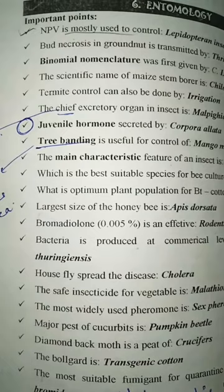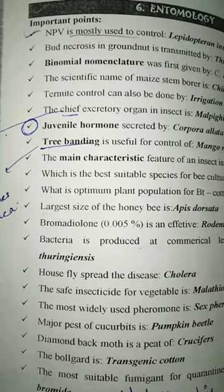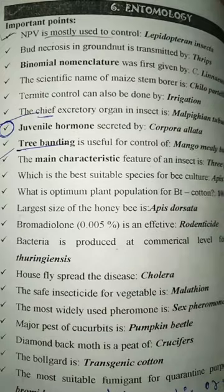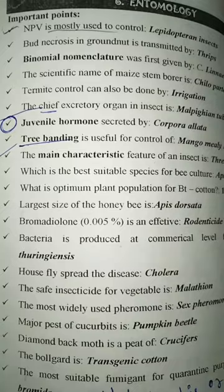Third is about binomial nomenclature. Binomial nomenclature means giving a scientific name to every pest or every insect. This system was first given by Carolus Linnaeus.